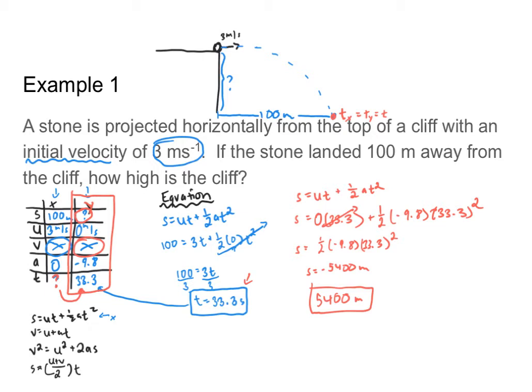I have an answer to this question. What I did was fill out my two-dimensional suvat table, figured out using the x direction information how long the object was in the air, put that into the suvat table for the y direction, and used that information to figure out my displacement. Let's do one more example.